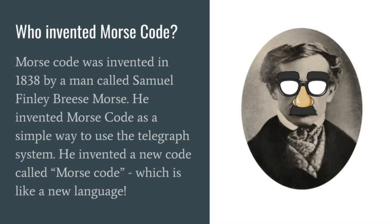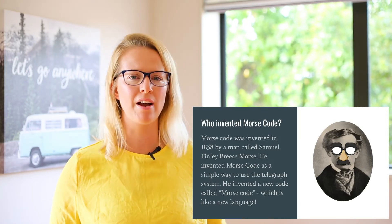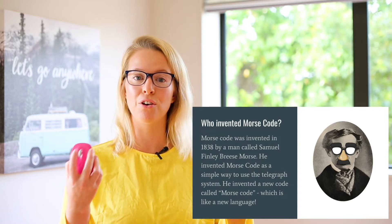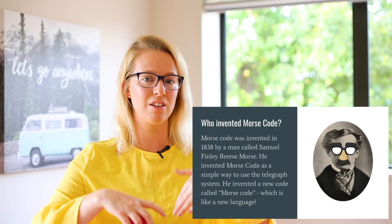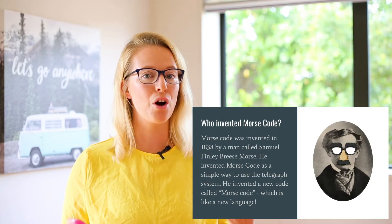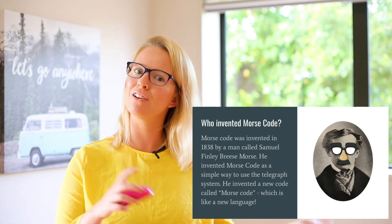So who invented this thing called Morse code? Morse code was invented in 1838 — so long ago — by a man called Samuel Finlay Breeze Morse. He invented Morse code as a simple way to use the telegraph system — a new code, like a new language. Some of you might have heard the word 'code' used before, maybe when talking about computers or websites, where you use code to make different symbols so that websites and lots of things work. So code has been around for a really long time, but it looked different back then.